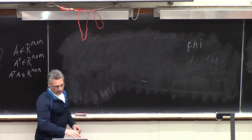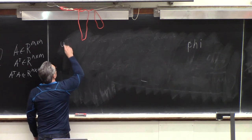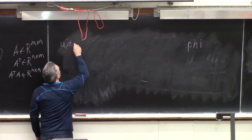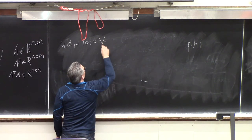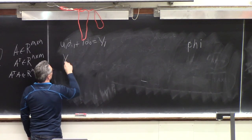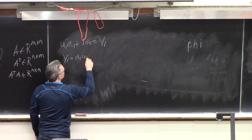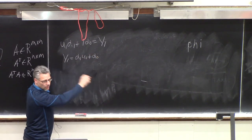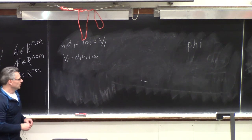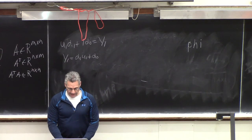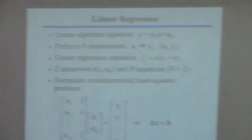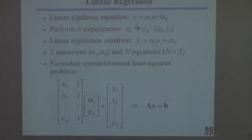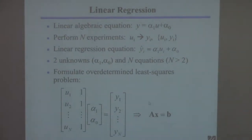If you take the first row and multiply it by the first column, you get U1 times alpha 1 plus 1 times alpha 0, which equals Y1. That's just the first equation: Y1 equals alpha 1 times U1 plus alpha 0. So each row corresponds to one of the equations — the result of one of the experiments. The A matrix is known because you chose the U values in each experiment to observe the resulting Y.